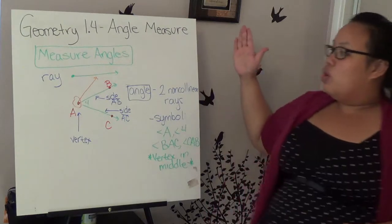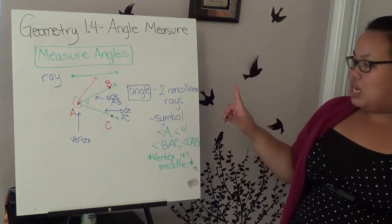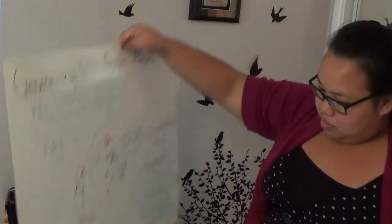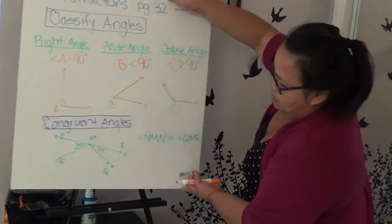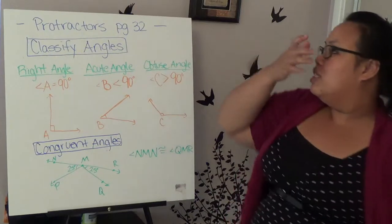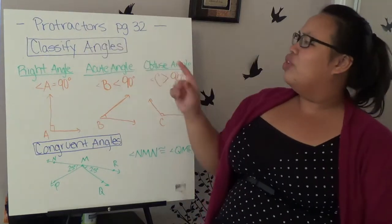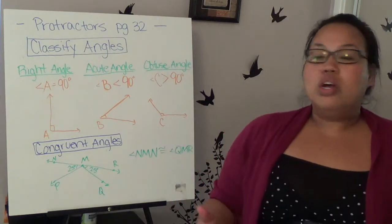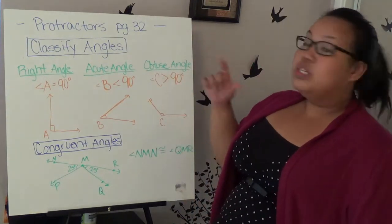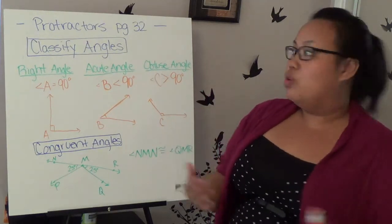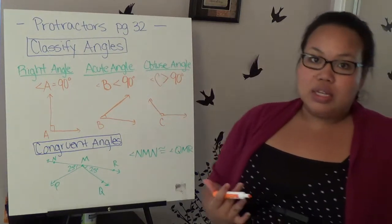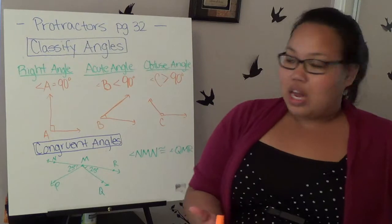Before we get into class, you should overview Protractors, page 32. Some of you guys have used Protractors before and some of you haven't. We're going to go exactly how to use it in class. Basically, a Protractor helps you measure the degrees, and a degree will help you classify what kind of angle.